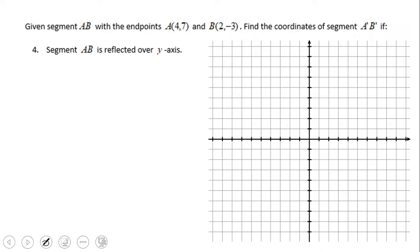So let's plot the first one. Okay, so that is the point A at (4, 7).